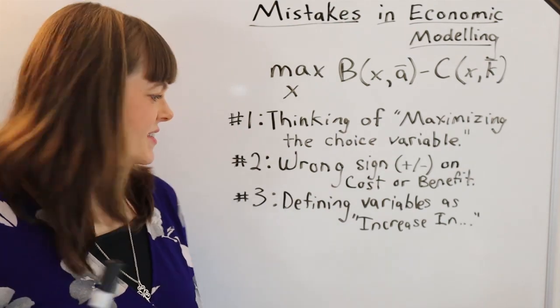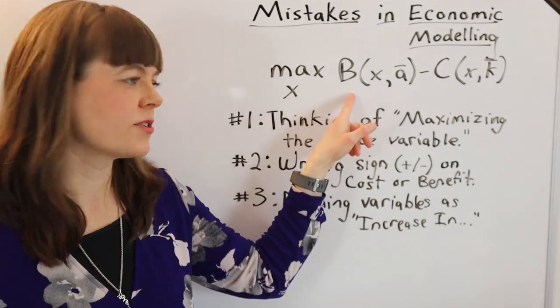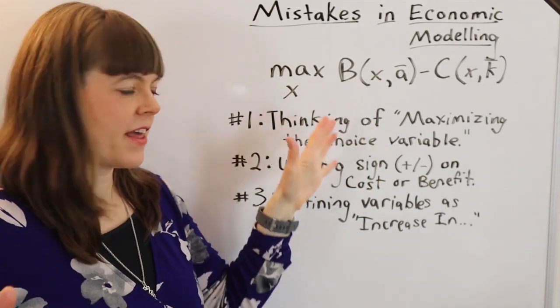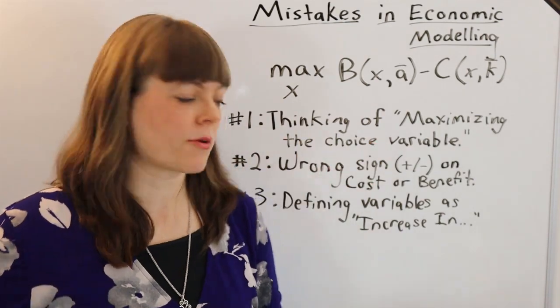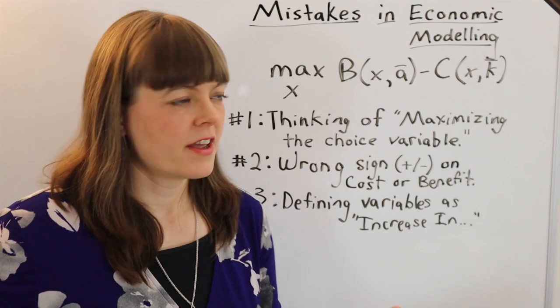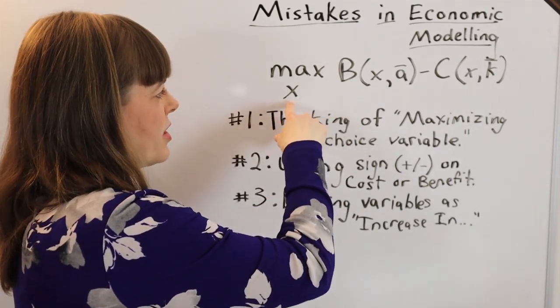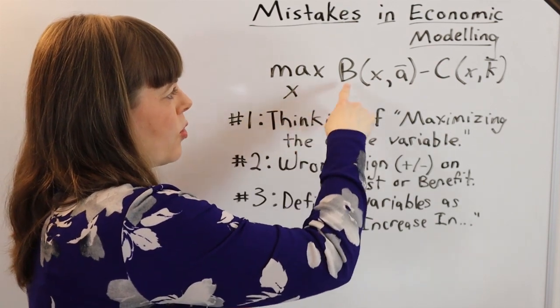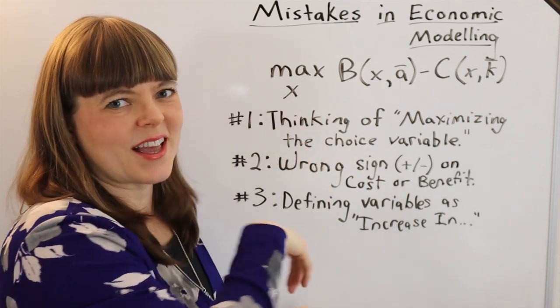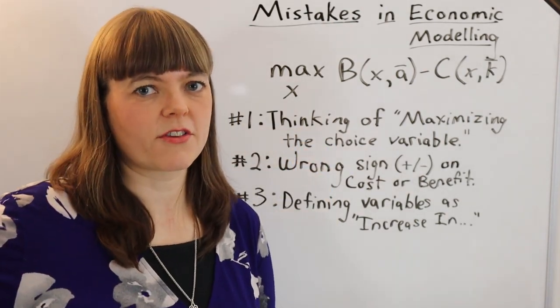The third mistake that I see a lot in student models is that when they define variables, they'll define the variable as increase in something rather than the thing. And of course that is wrong because increase in, that's associated with the derivative. So if your benefit is health, then you want a situation where changing your choice variable will increase this, not increase an increase in this rate. That's sort of the second derivative rather than the first derivative.